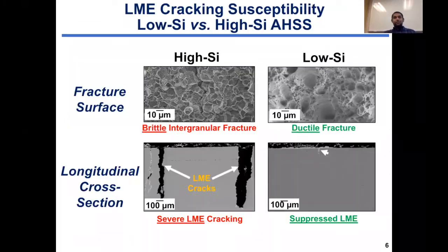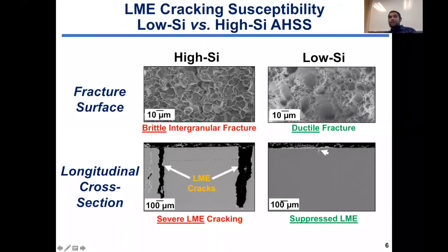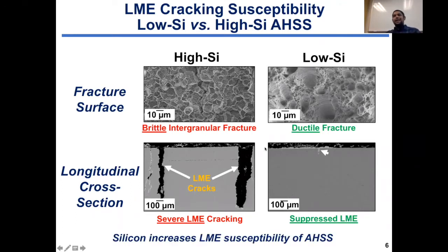We had a very interesting observation. The high silicon AHSS showed a clear brittle intergranular fracture with large LME cracks observed in the cross-section, whereas the low silicon AHSS clearly suffered a ductile fracture with little to no LME cracks observed in the longitudinal cross-section. So silicon increases the LME susceptibility of advanced high-strength steels — let's try to understand why.